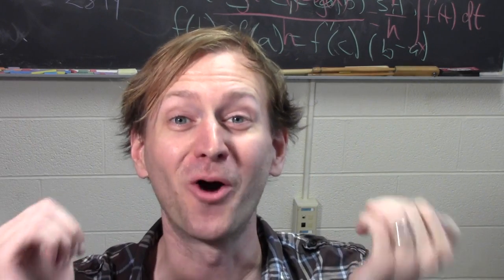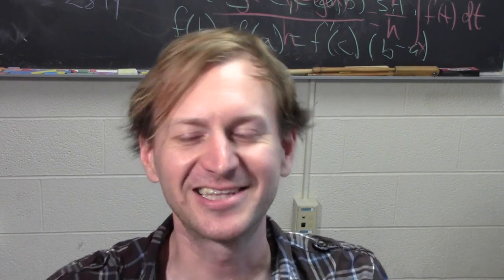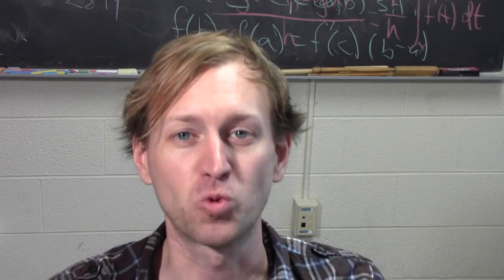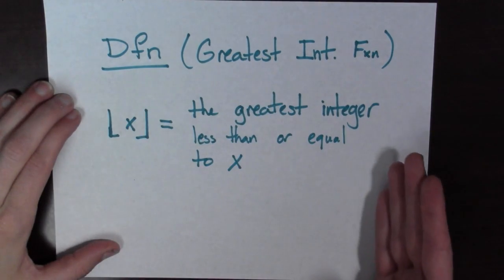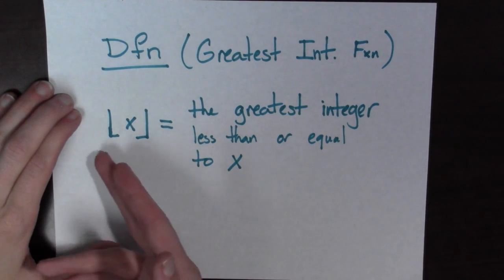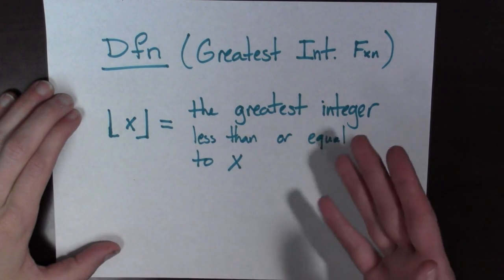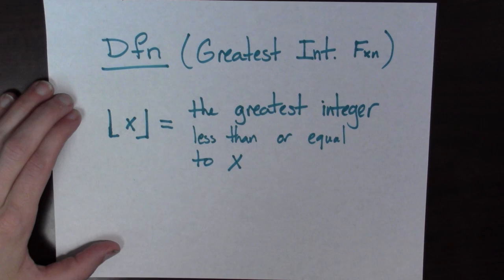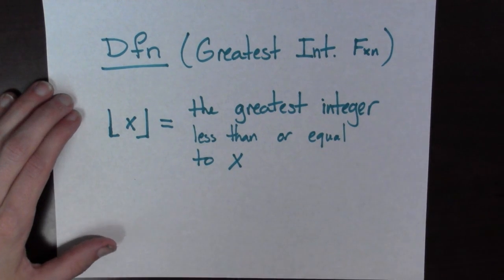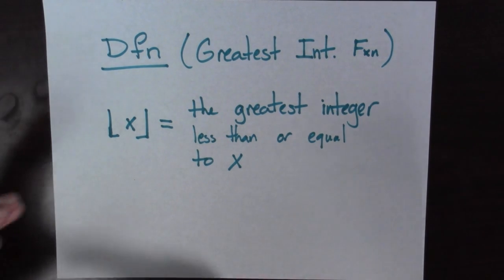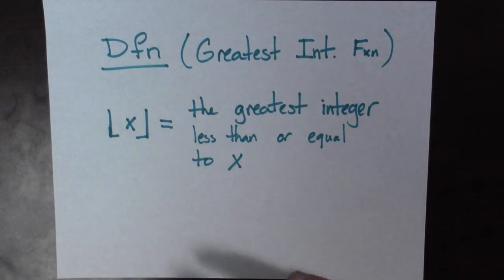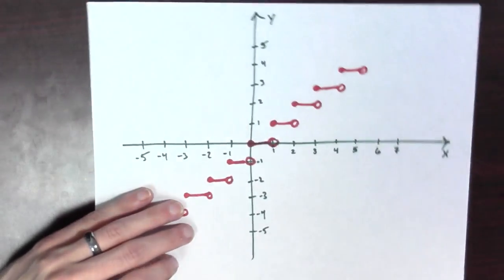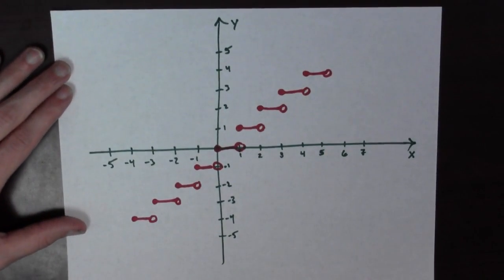So, now we know the Greatest Integer function. It's really just a function that rounds down. So, here's the definition of the Greatest Integer function again. No, it's not really a formula. It's more of a concept. Remember, all functions are mapping such that for every value in the domain, there is exactly one value in the range.